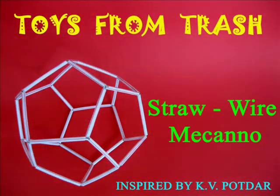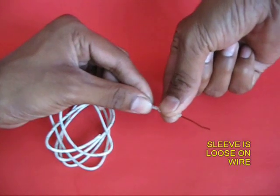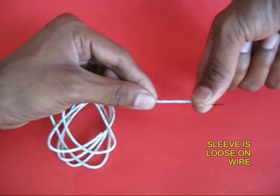This is a very simple Meccano where straws are used as elements and wire to make joints. You require wire with a sleeve on the top.